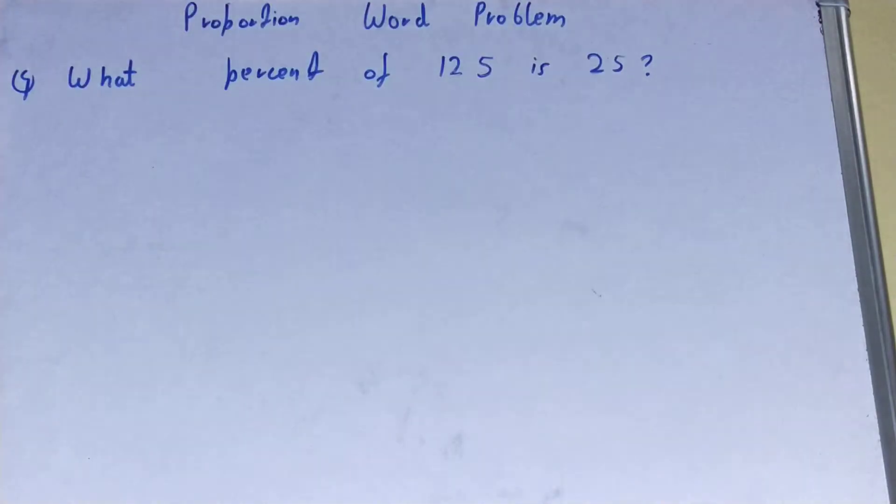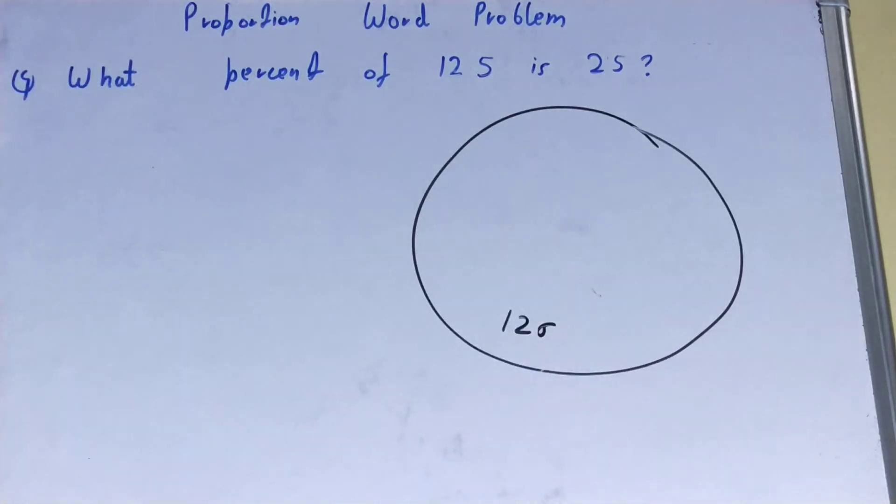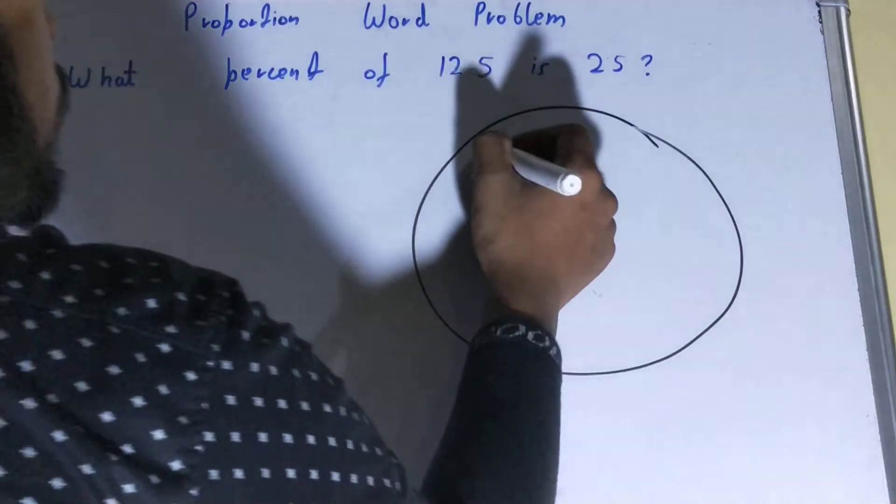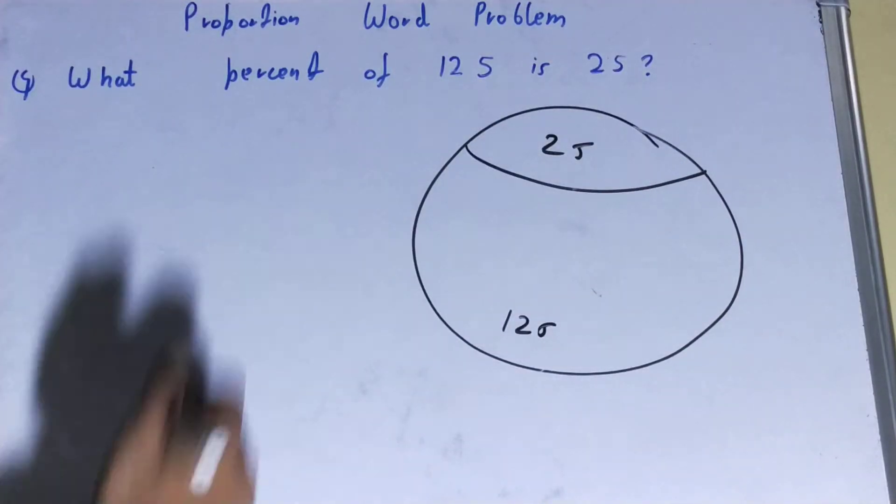You can imagine it like this: you have a big circle that has a value of 125 as a whole. From that, you have to tell what is 25 of it.